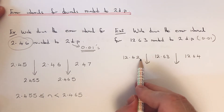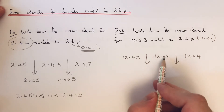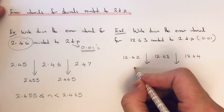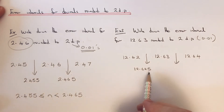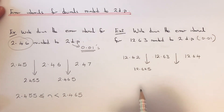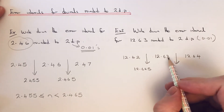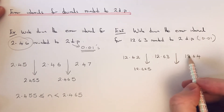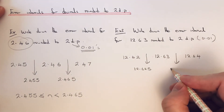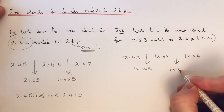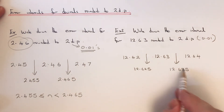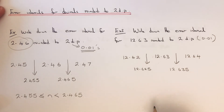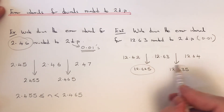Halfway between 12.62 and 12.63 would be 12.625 — notice I'm just putting a five on the end of the lower number. And halfway between 12.63 and 12.64 is 12.635 — again, just putting a five on the end of that lower number.